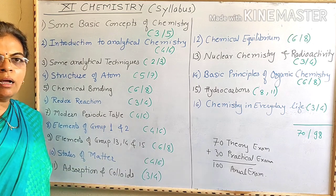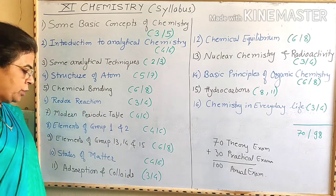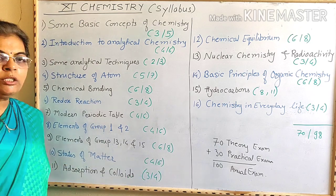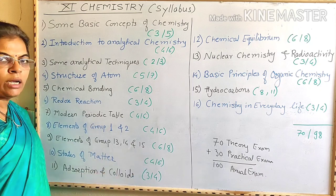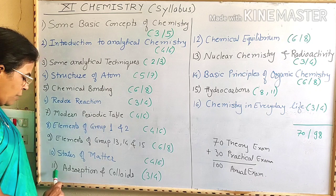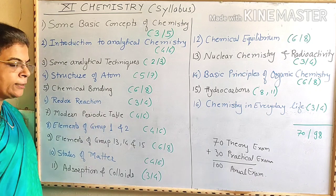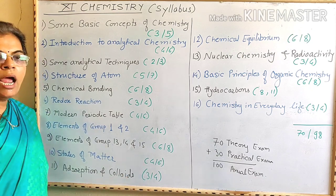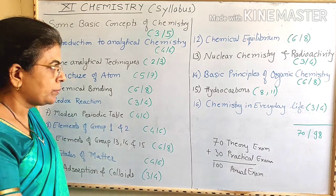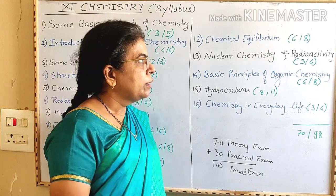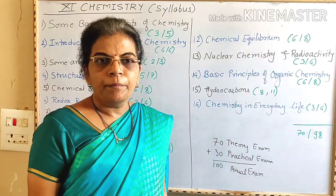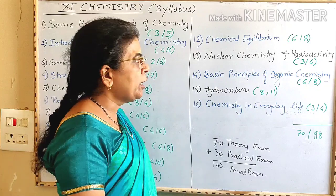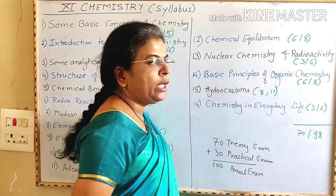Topic 10 has a weightage of 6 or 8, with 4 marks with options. Topic 11 is Adsorption and Colloids. Weightage is 3 or 4 — 3 marks questions are compulsory and 4 marks questions are with options. Topic 12 is Chemical Equilibrium. Weightage is 6 or 8 — 6 marks questions are compulsory and 8 marks questions are with options. Topic 13 is Nuclear Chemistry and Radioactivity. Weightage for this topic is 3 or 4.